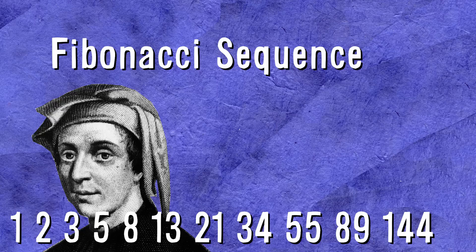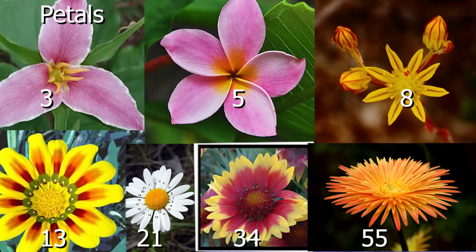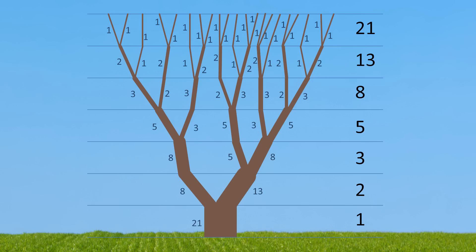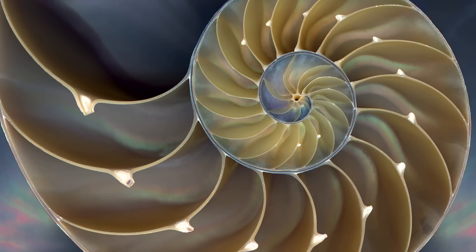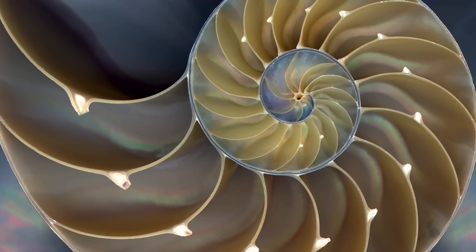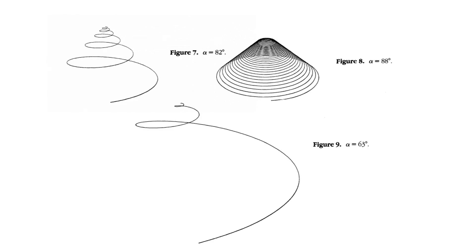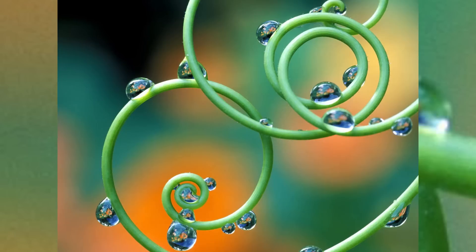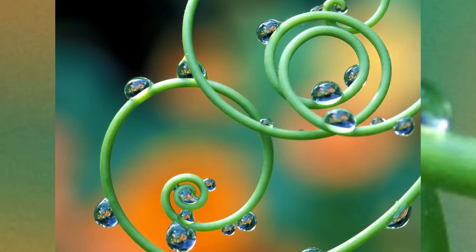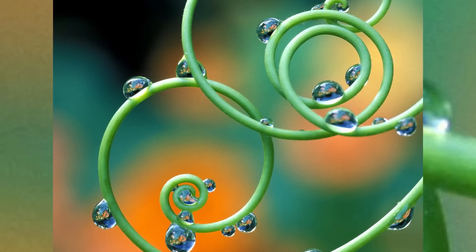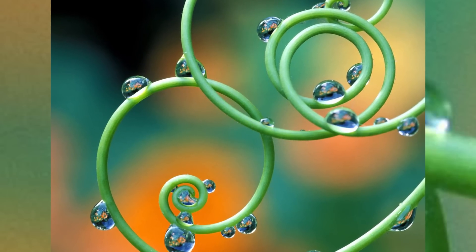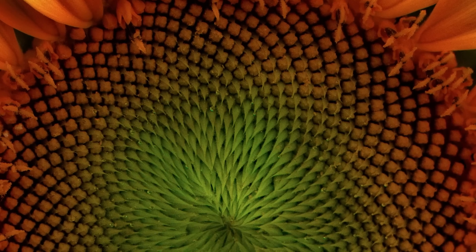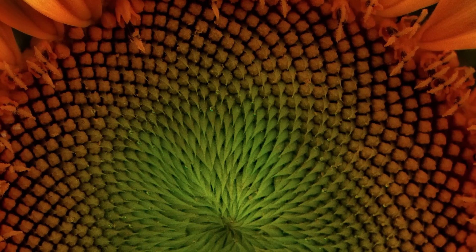And it's not just rabbits. These numbers seem to appear everywhere in nature — in the number of petals on a plant, in the way a tree produces branches, in the whirl of a pine cone, in the growth of seashells, even in the flight paths of birds of prey. It's amazing to think that some of the most beautiful aspects of nature come through the application of the mathematics in the Fibonacci series.